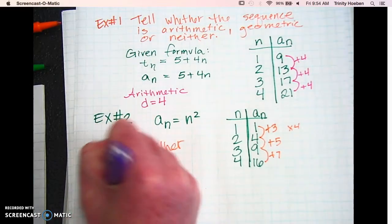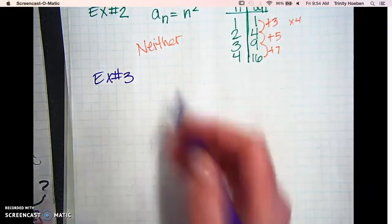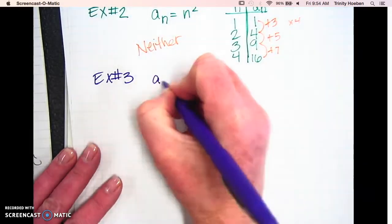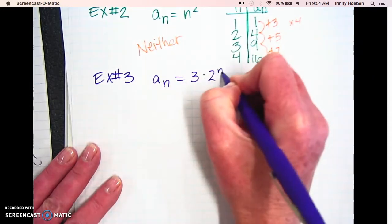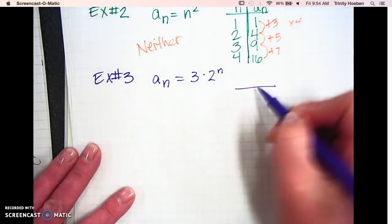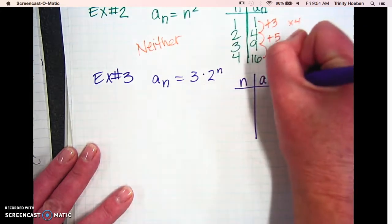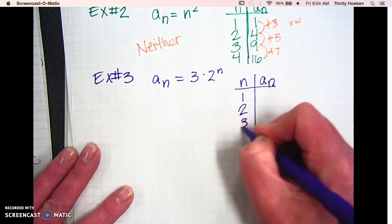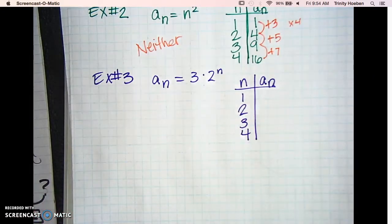Example number 3. We have a sub n equals 3 times 2 to the n. Same directions. We're going to plug in for n. Get our a sub n. Doesn't give us any specific numbers, so start easy with 1, 2, 3, and 4. Order of operations says you have to do what first? Multiply or exponent? Exponent.